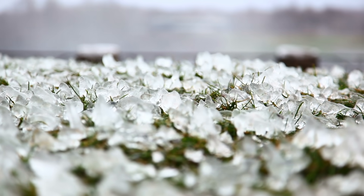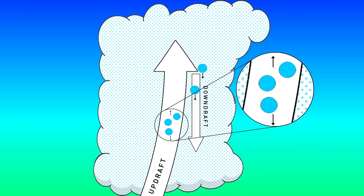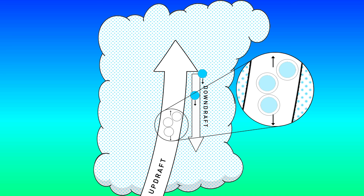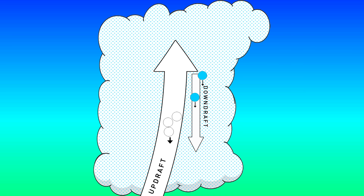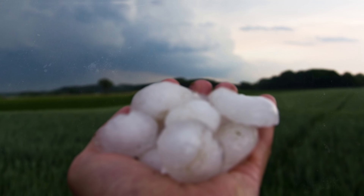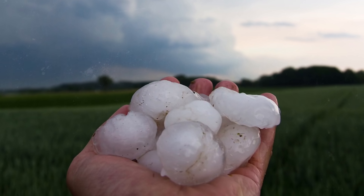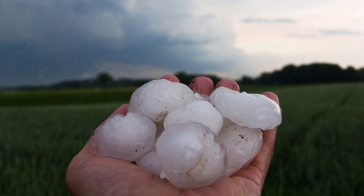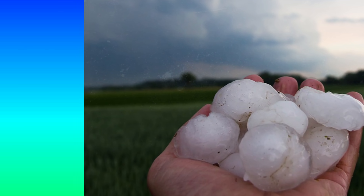If the updrafts are just strong enough to keep the snow pellets from falling any farther, the pellets will bob and spin in place, gathering more and more supercooled droplets, which freeze solid, growing the hailstone almost continuously until they are finally too heavy for the updrafts and they fall to the ground.